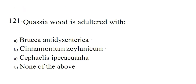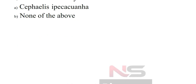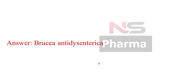Next question. Quassia wood is adulterated with: Option A. Brucea antidysenterica. Option B. Cinnamomum zeylanicum. Option C. Cephaelis ipecacuanha. Option D. None of the above. Answer: Brucea antidysenterica.